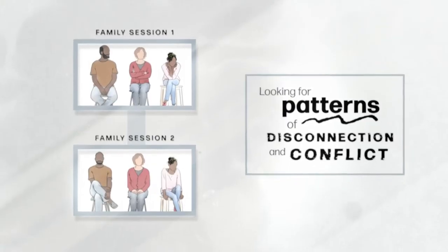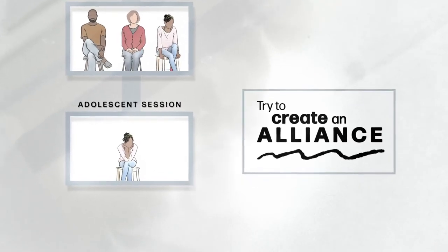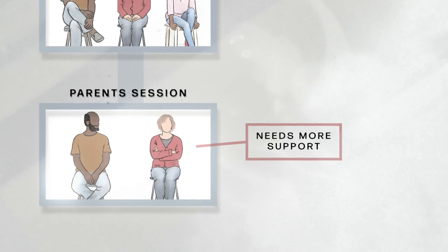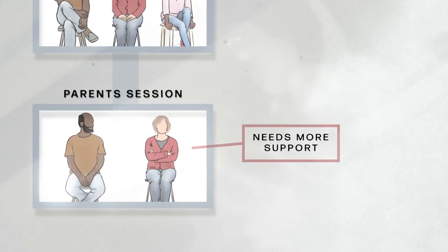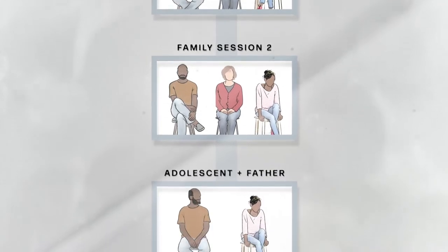Then the format of the family therapy sessions will vary. The therapist might see the adolescent by themselves to create an alliance and get a better sense of their emotional reality. The therapist might see the couple together because they can't form a parenting team or because the mother needs more support from the father. So the therapist looks at the attachment drama in the family and sets up different sessions with different subsystems of the family.